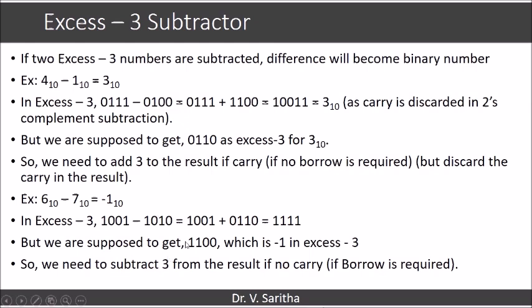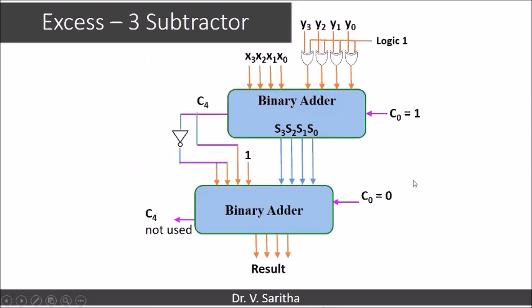Using this analysis we are going to draw the circuit. The first number is considered as X3, X2, X1, X0. For the second number we take the 2's complement — first we get the 1's complement by giving Y3, Y2, Y1, Y0 as inputs to XOR gates with the other input as logic 1. We get Y3 bar, Y2 bar, Y1 bar, Y0 bar. With C0 input set to 1, we compute X plus Y-bar plus 1, performing binary subtraction on XS3 numbers.